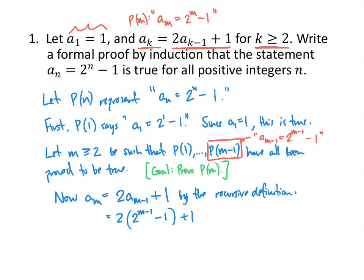Now we do some algebra. Distributing the 2, we get 2 times 2 to the m minus 1, minus 2, plus 1. We can think of 2 as 2 to the first power, so we add those exponents to get 2 to the m. Then negative 2 plus 1 is negative 1, giving us 2 to the m minus 1. That's what we wanted — our goal was to prove that P of m was true, which says a sub m equals 2 to the m minus 1.